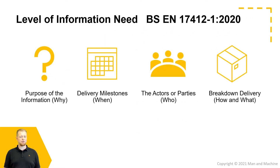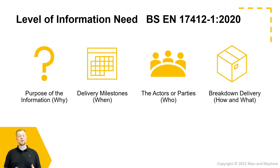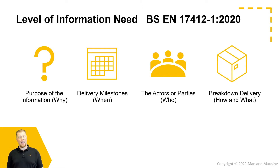These are typically broken down into four key areas. First, why — why are we producing this information and what's the purpose? Second, when — the delivery milestones at which this information needs to be delivered. Third, who — who needs to deliver this information and who is it being delivered to? This is commonly known within this document as actors, but may also be referred to as parties within ISO 19650. And then how and what — what are we actually delivering and what are the methods to produce that information?